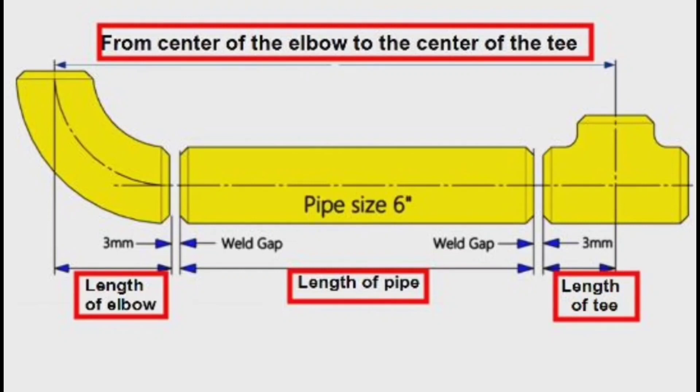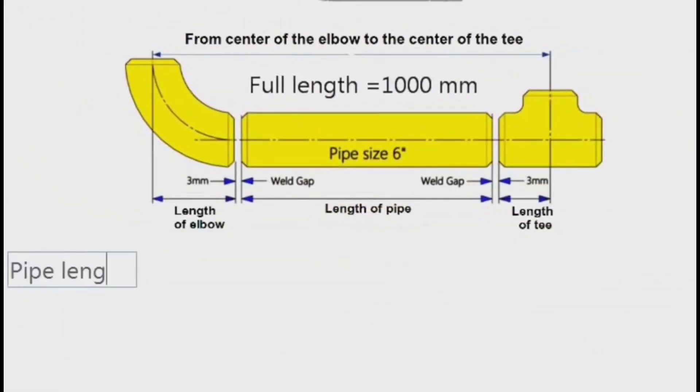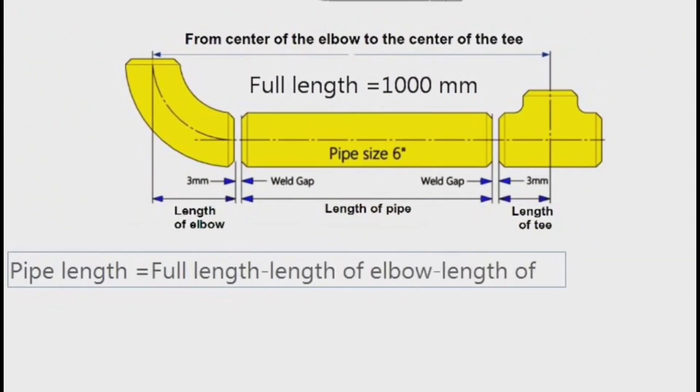To find the length of the pipe section, subtract the lengths of the elbow, tee, and weld caps from the full length of the pipe section. In other words, pipe length equals full length pipe section minus elbow dimension minus tee dimension minus 3mm minus 3mm weld caps.